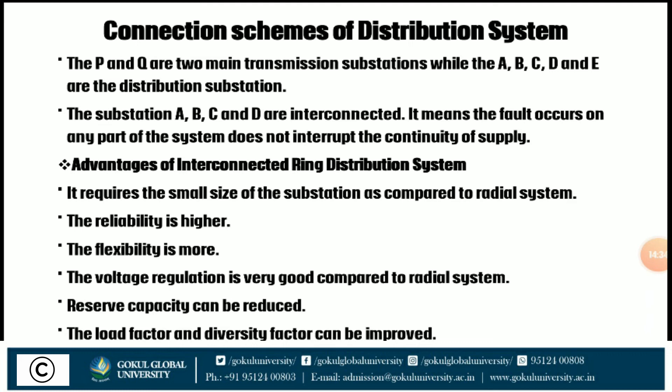In the interconnected grid system, points P and Q are the main transmission substations, while A, B, C, D, and E are distribution points. If a fault occurs on any part of the system, it does not interrupt the continuity of supply. Advantages: it requires smaller size substations compared to radial systems; reliability is higher; flexibility is more; voltage regulation is very good; reserve capacity can be reduced; and load factor and diversity factor can be improved.